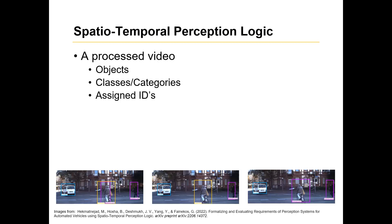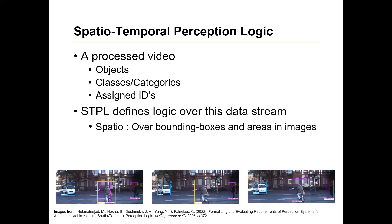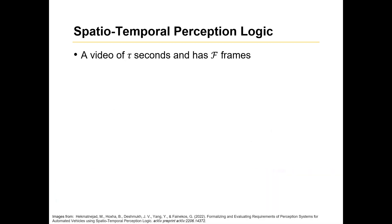So what STPL does is that it takes in the objects that are identified in a particular video, the classes and their corresponding categories for every frame, their assigned IDs, and they basically try to define logic over this data stream in terms of spatial, the first term of this logic framework. So what spatial means is we are dealing with bounding boxes and areas in the images. And what perception means is we are dealing with objects and how they move or how they are tracked in a particular framework.